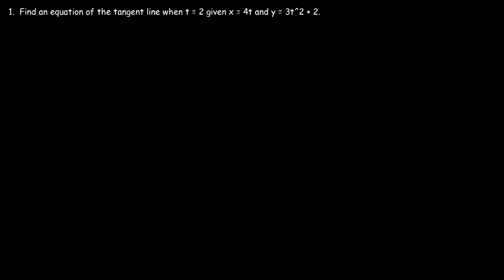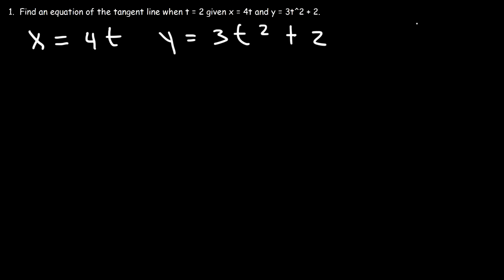In this video we're going to talk about how to find the equation of a tangent line for parametric functions. We're given that x is equal to 4t and y is equal to 3t squared plus 2. We want to find an equation of the tangent line given the parameter t equals 2.